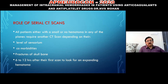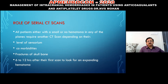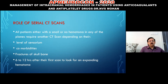A repeat CT scan is a must for all patients—whether with a small or no hematoma in any plane—if there is a decrease in level of sensorium, any comorbidities, or a skull fracture. Repeat the scan 6 to 12 hours after the first scan to look for expanding hematoma. If the INR is very high, hematoma can expand much earlier than six hours.